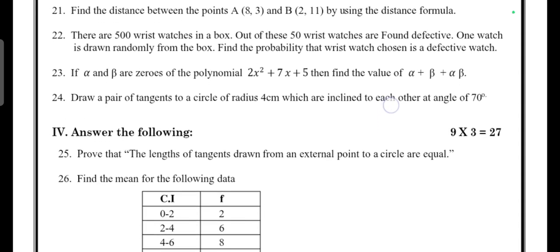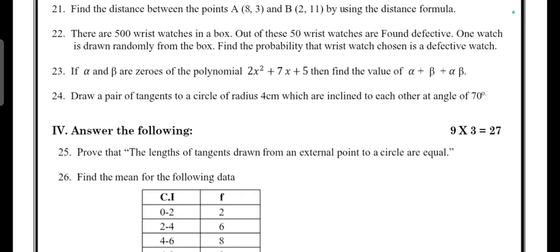There are 500 wristwatches in the box, out of these 50 wristwatches are found defective. One watch is drawn randomly from the box. Find the probability that the wristwatch chosen is a defective watch. If α and β are the zeros of the polynomial 2x² + 7x + 5, then find the value of α + β + αβ.